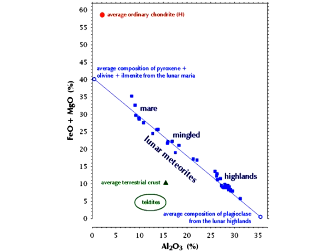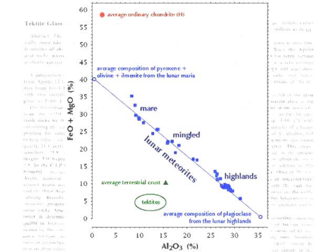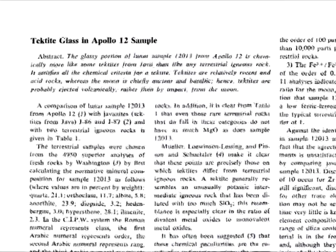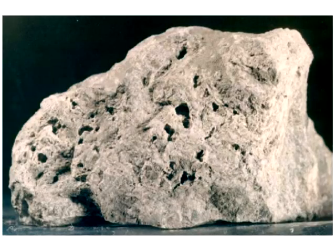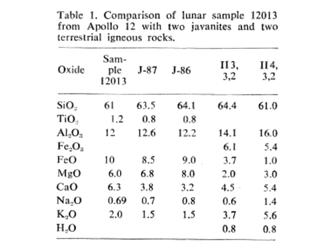Korotev puts tektites as having substantially lower FeO, MgO, and Al2O3 percentages than moon rocks. But this is incorrect. In the June 5th, 1970 issue of Science, John O'Keefe wrote an article titled 'Tektite Glass Found in Apollo 12 Sample.' The sample in question is number 12013. O'Keefe compared the sample to two tektites from Java, Javanite 86 and Javanite 87.